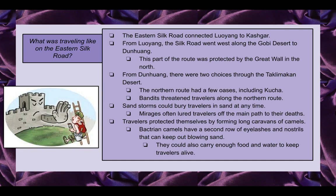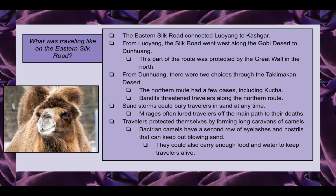Travelers protected themselves by forming long caravans — even a thousand camels lined up traveling through the desert. There was a special kind of camel, the Bactrian camel, which has a second row of eyelashes and nostrils that can keep out blowing sand, which is very beneficial. They could also carry enough food and water to keep travelers alive.